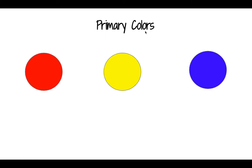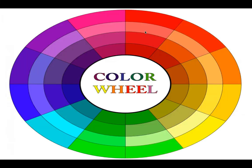red, yellow, and blue. These colors can be mixed to make all the different colors on the color wheel. Here's an example of the color wheel.